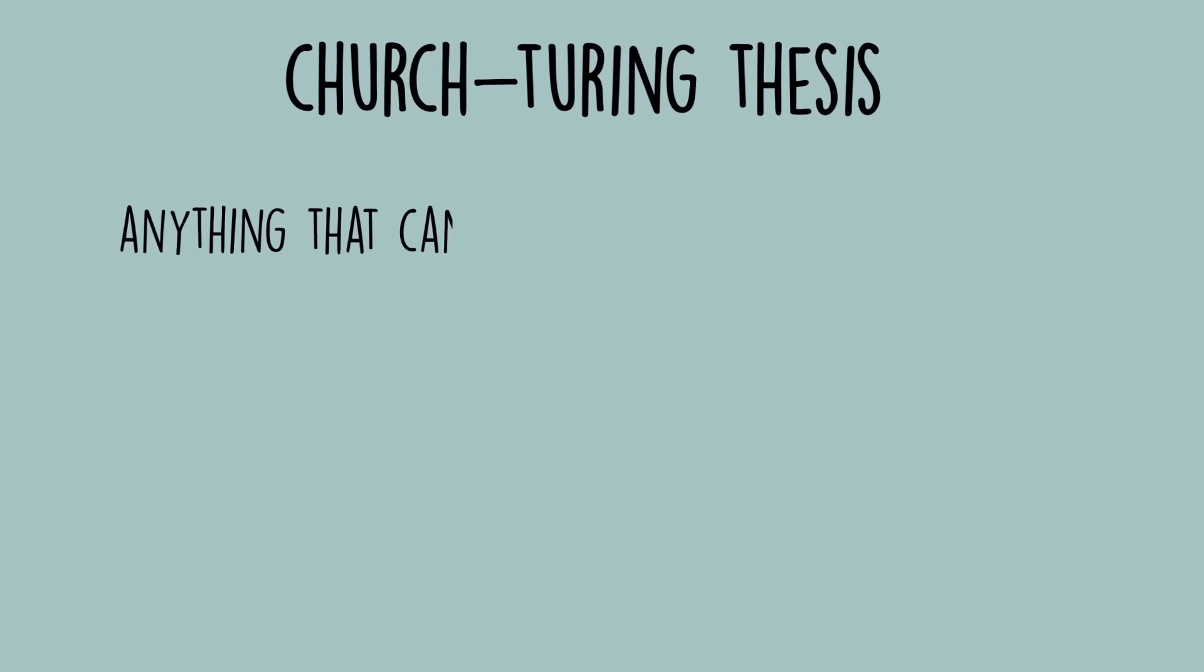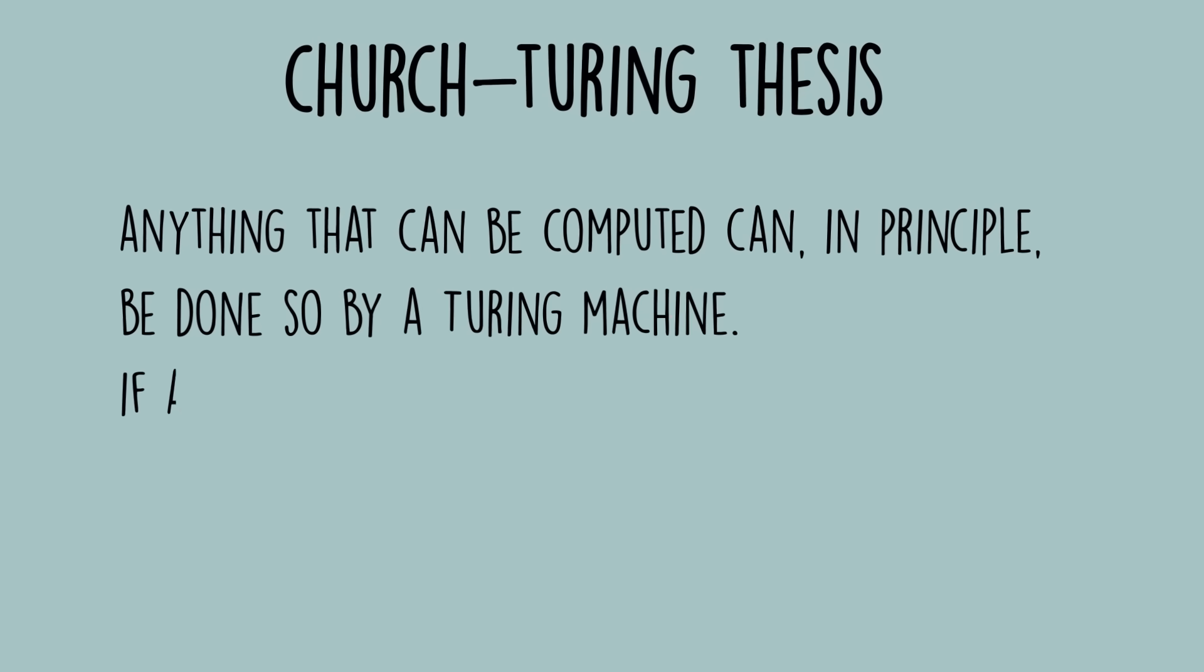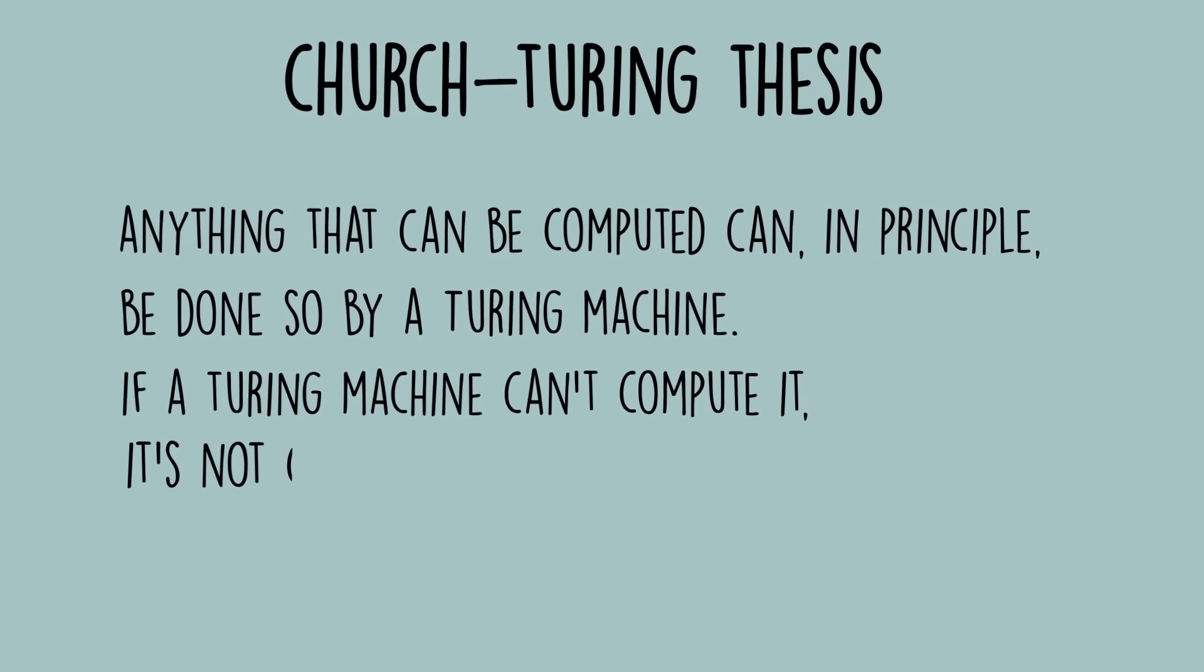Even though they were conceived nearly 90 years ago, there is currently no working model of computation more powerful than Turing's. This is embodied in the Church-Turing thesis, which states that anything that can be computed can, in principle, be done so by a Turing machine. If a Turing machine can't compute it, it's not computable.